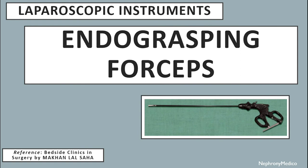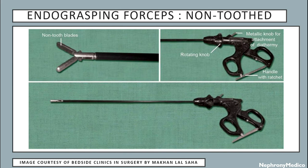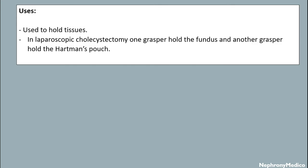Let's talk about endograsping forceps. This is a picture showing endograsping forceps of the toothed variety, and another picture shows the non-toothed variety. Uses: they are used to hold tissues. In laparoscopic cholecystectomy, one grasper holds the fundus and another grasper holds Hartmann's pouch.